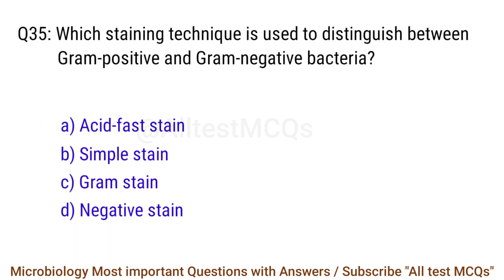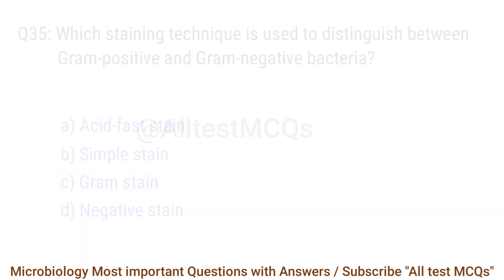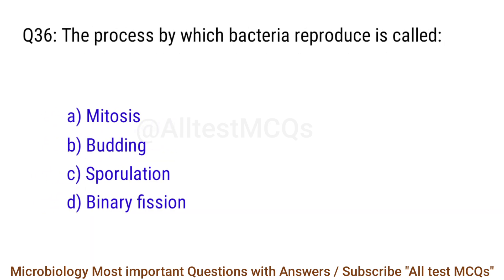Q35. Which staining technique is used to distinguish between gram-positive and gram-negative bacteria? The correct answer is option C: Gram stain. Q36. The process by which bacteria reproduce is called? The right answer is option D: Binary fission.